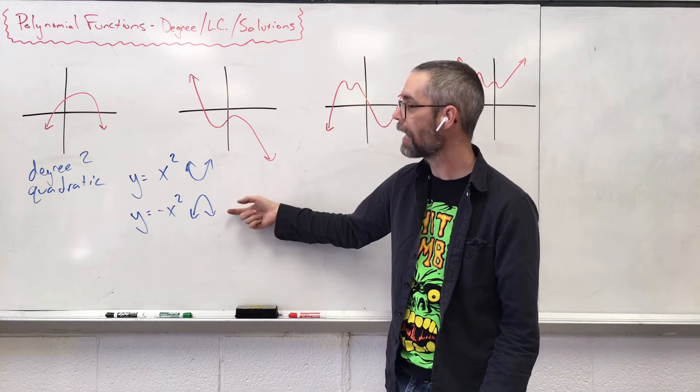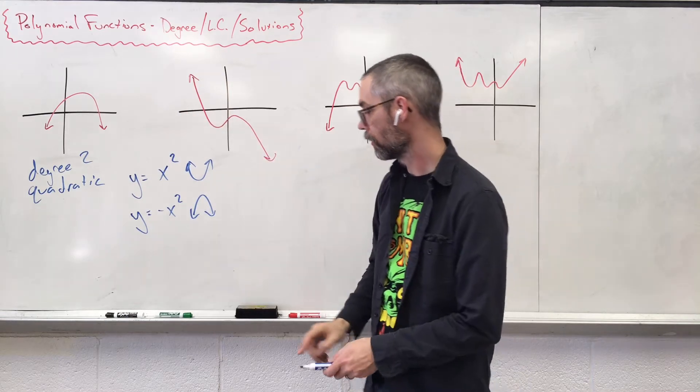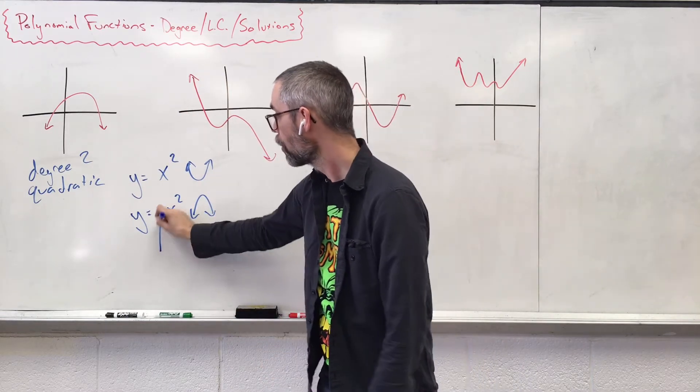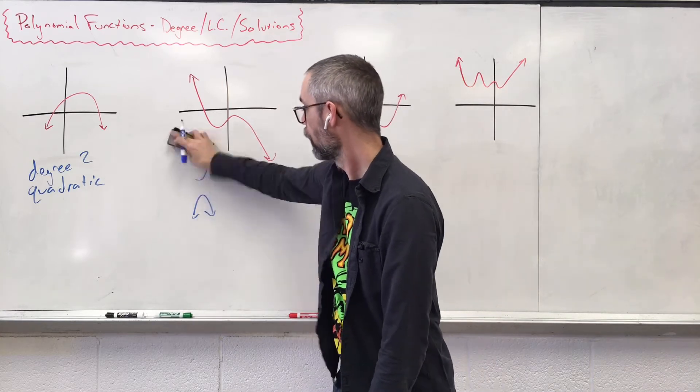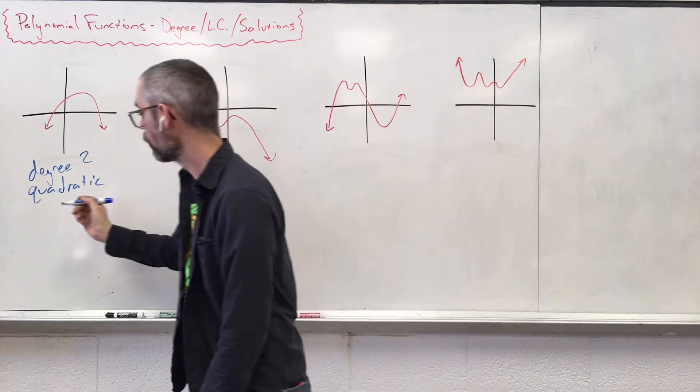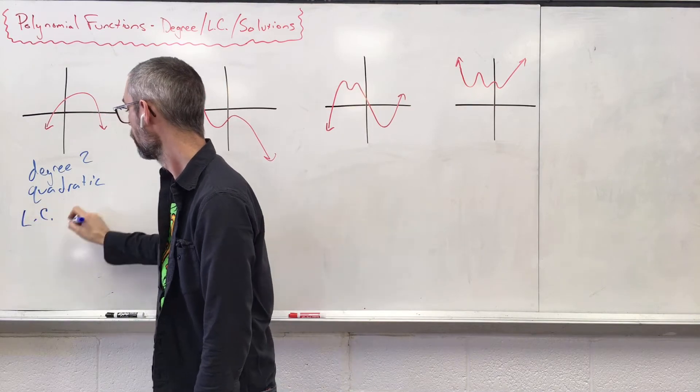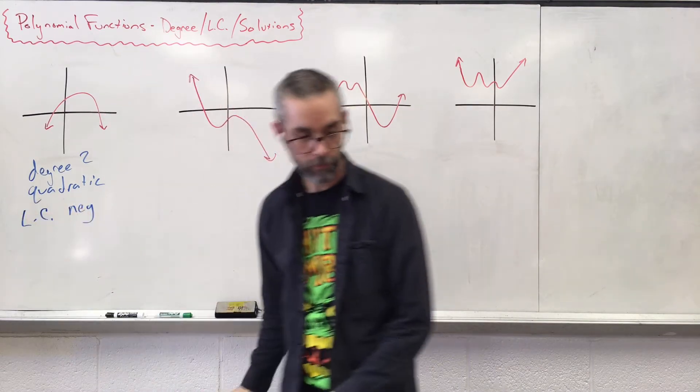What's going on while our graph is upside down? We must have a negative number out in front. So we then say our leading coefficient is just negative.